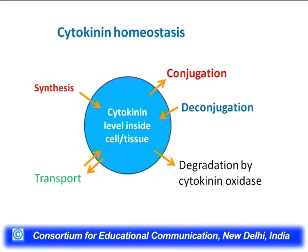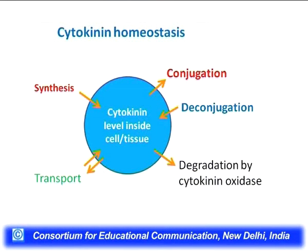Now we will discuss cytokinin homeostasis. Homeostasis describes how any system or process is controlled — in this case, how cellular levels of cytokinin are maintained. Homeostasis essentially involves synthesis, degradation, conjugation, and transport. The cellular cytokinin level is increased by synthesis, can come in via transport, can be inactivated by conjugation, de-inactivated by deconjugation, or degraded by cytokinin oxidase.